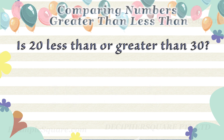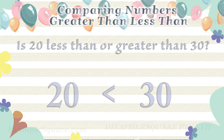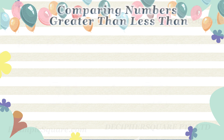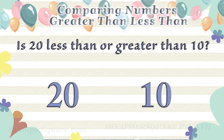Is twenty less than or greater than thirty? Twenty is less than thirty. Is twenty less than or greater than ten? Twenty is greater than ten.